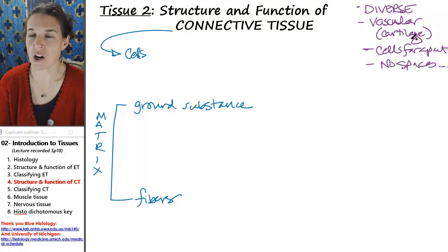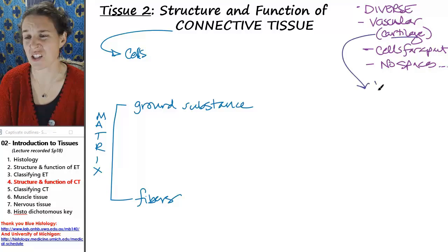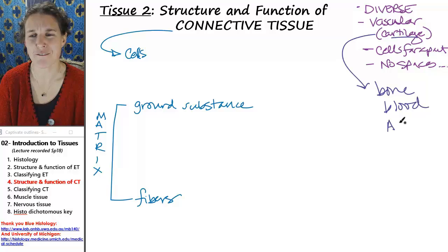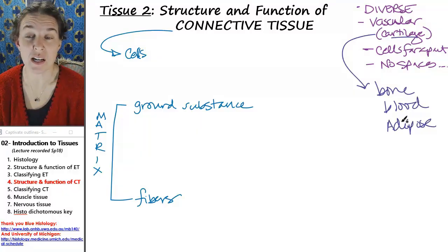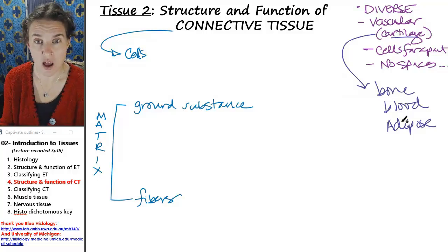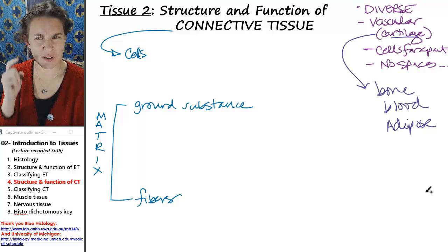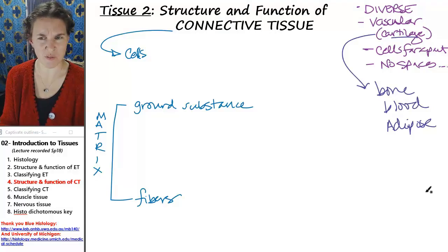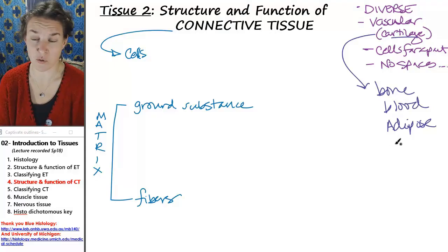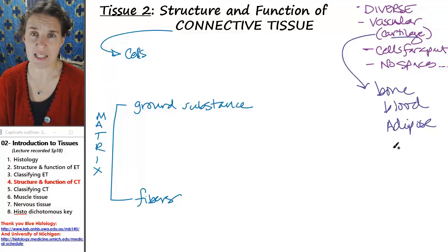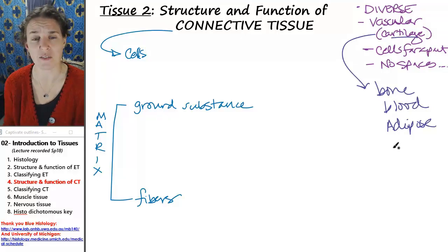We learned that cartilage is a connective tissue. If cartilage is, so is bone. So is blood. So is fat, adipose. These are examples of connective tissues that are weird, like, oh man, that's a really diverse group of things. Plus you have normal connective tissues, like dense regular or dense irregular connective tissue.